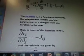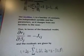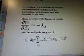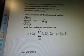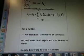The Jacobian J is a function of constants, the independent variable, and the parameters. So it changes from one iteration to the next, kind of like neutrinos do. This is in terms of the linearized model. And the residuals are given by this.